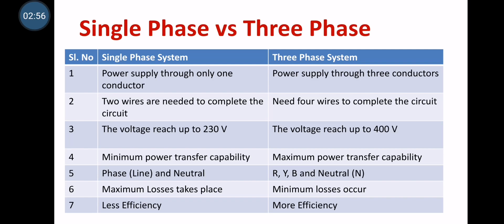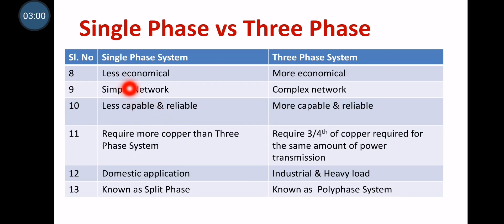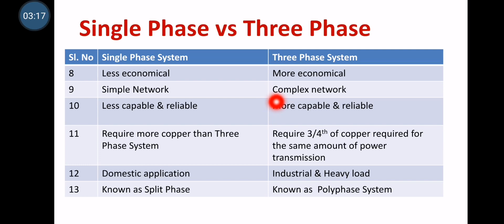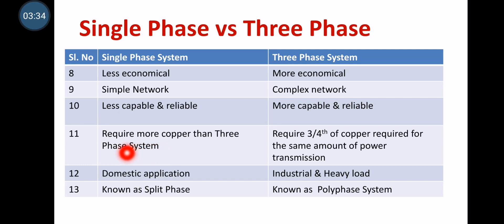These are a few differences. Single-phase system is less economical for high power transmission, whereas three-phase system is highly economical for high power transmission — that is why three-phase system is implemented for high power transmission. Single-phase system is too simple, but three-phase system is more complex. Single-phase system is less capable and reliable, but three-phase system is more capable and reliable. For the same amount of power transfer, single-phase requires more copper, whereas three-phase system requires only three-fourths of the copper — saving copper and making it economically favorable.